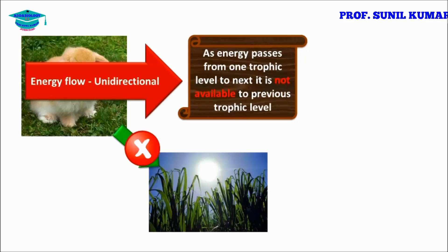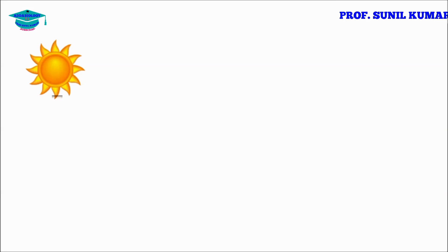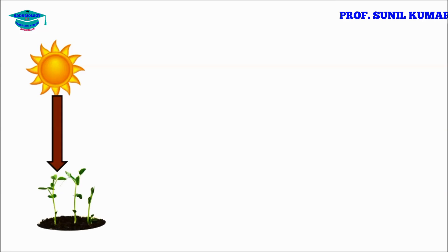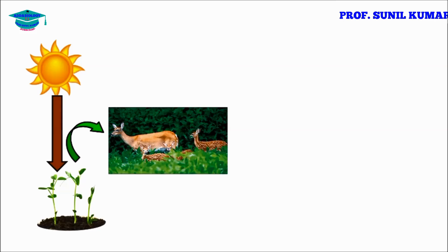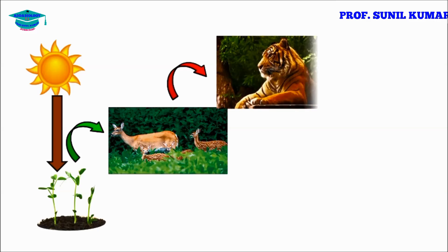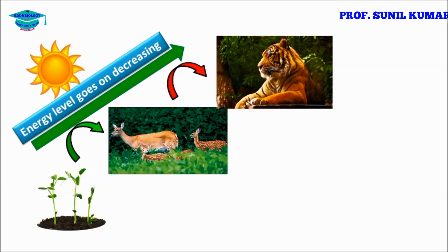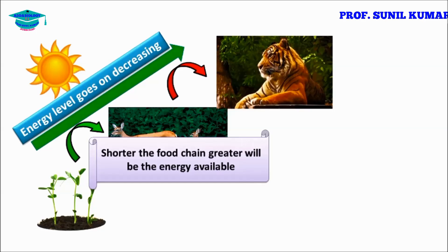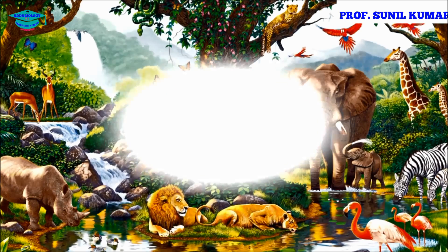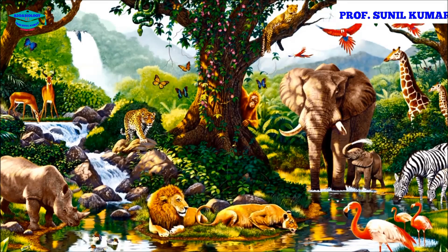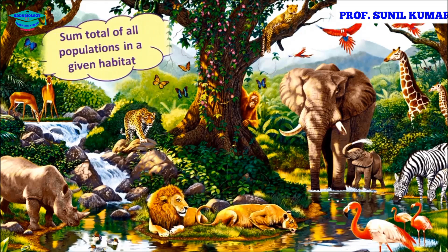Energy flows from the Sun, to plants doing photosynthesis, then deer eat the plants, and finally the deer is eaten by a carnivore — a very short food chain. If the food chain is short, the energy supply to the higher trophic level will be very high. Remember: shorter the food chain, greater the energy available.